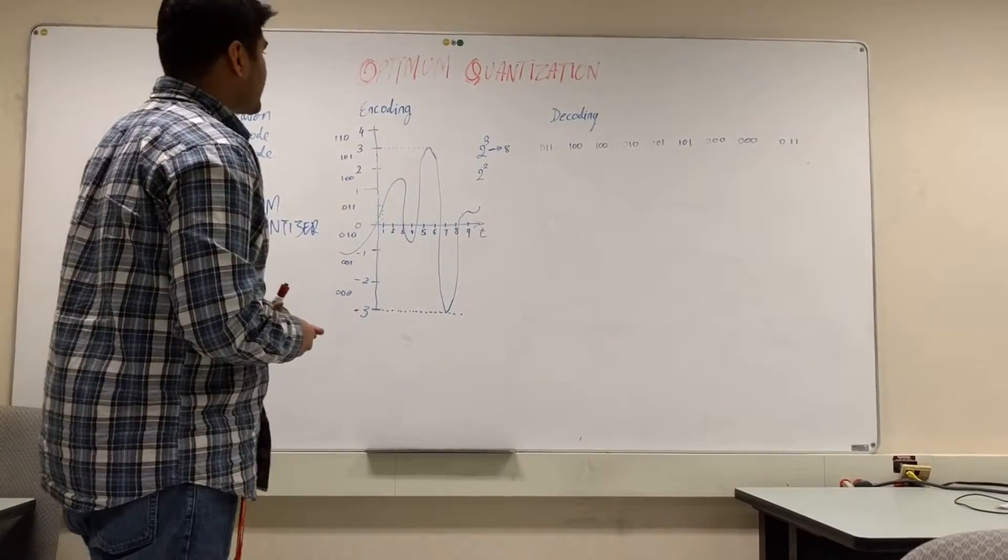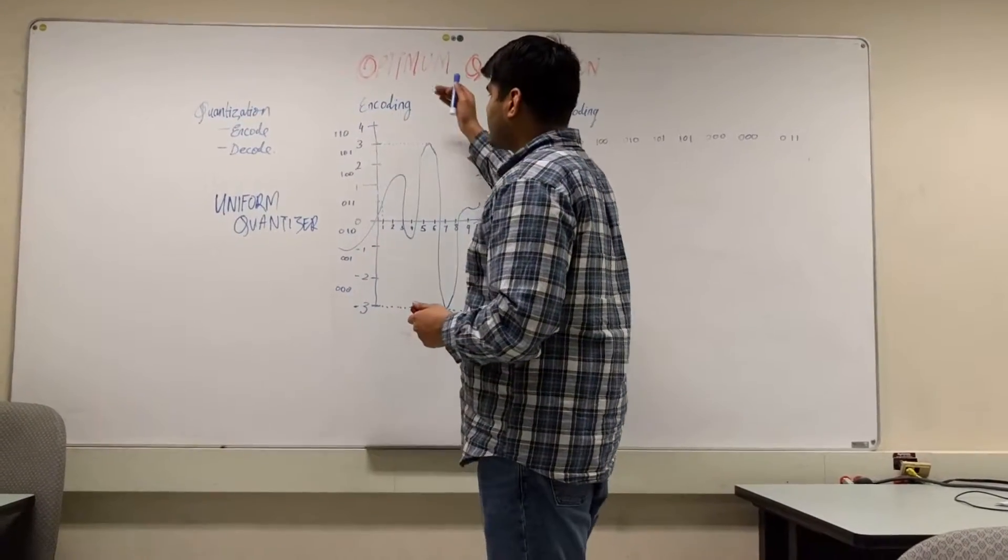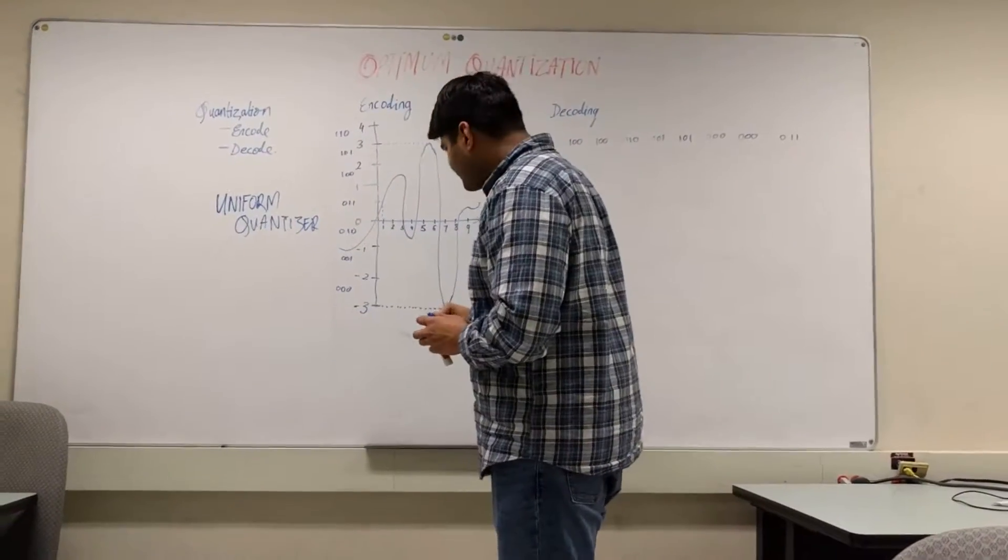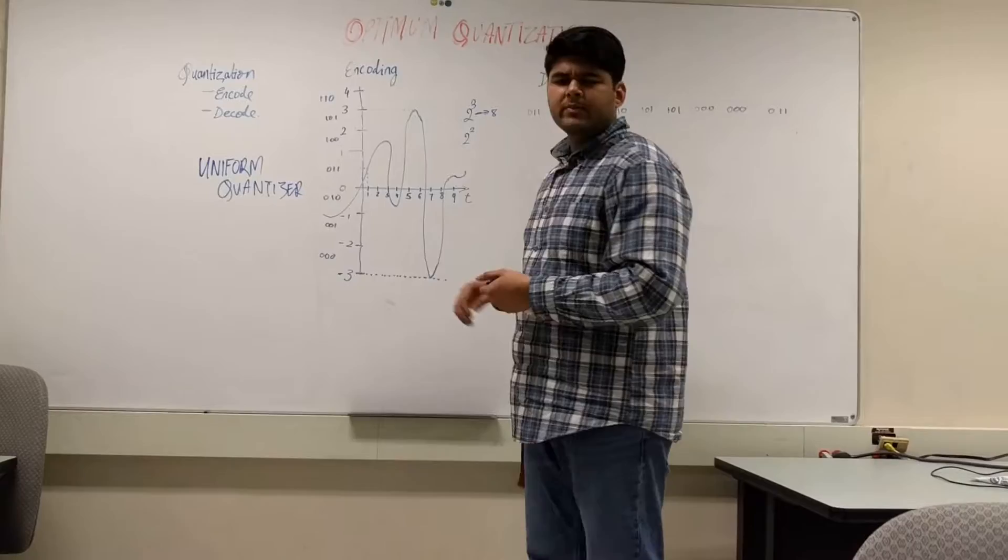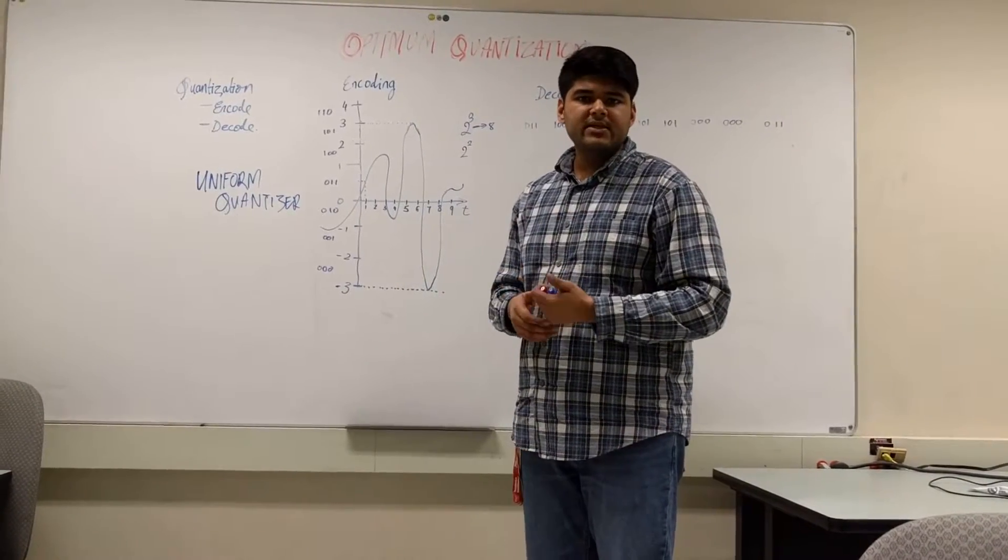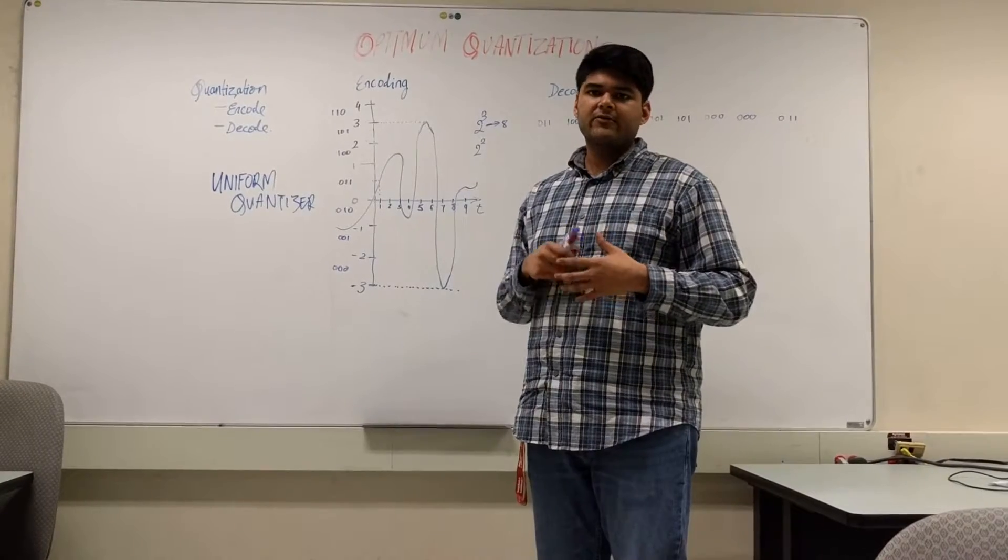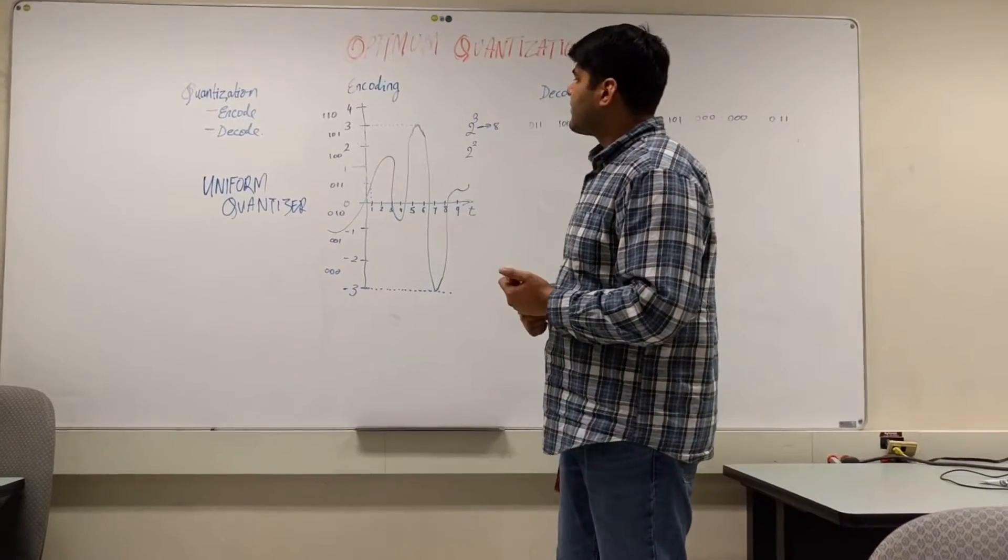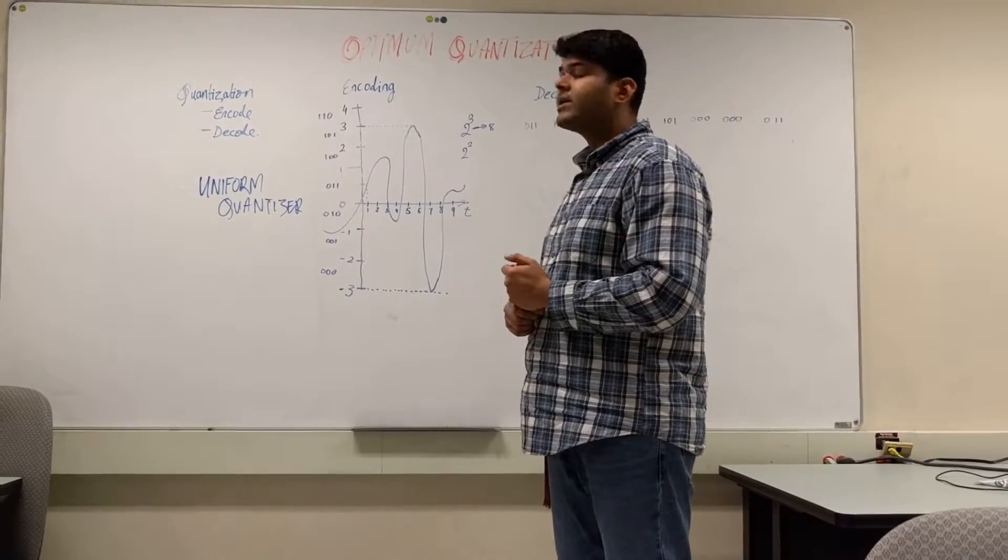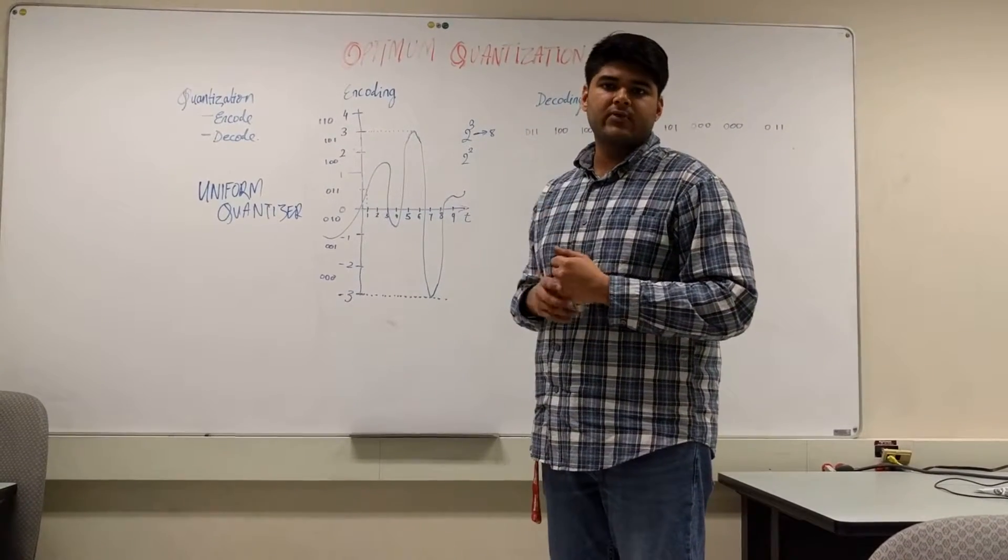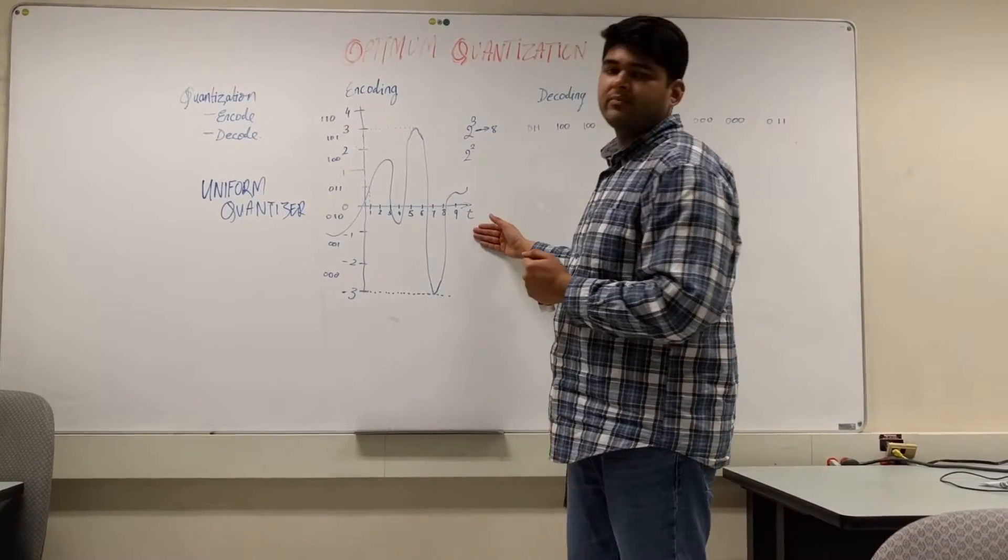Essentially, I shall be using this drawing right here to make you understand how the uniform quantizer works. Over here, we have a signal. It could be a sound signal, image signal, any sort of signal. On the y-axis, we have the different frequency values or amplitude values of the signal. And on the x-axis, we have the time for the signal.